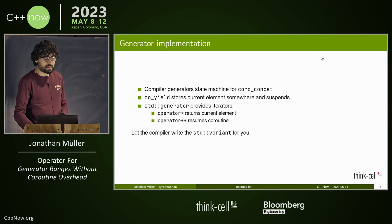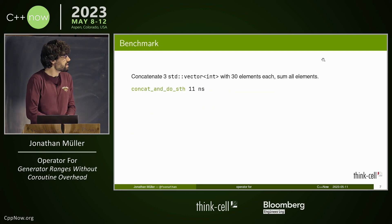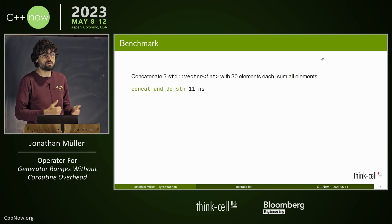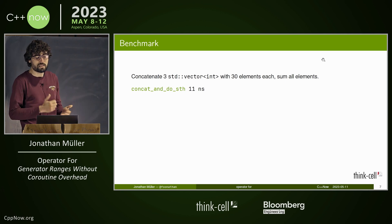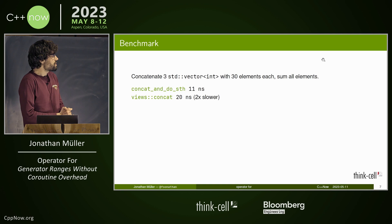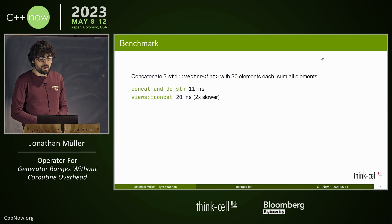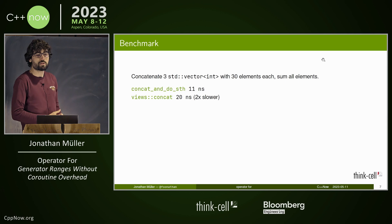So let's benchmark it. The idea is that the compiler writes the std::variant machinery for us, which is nice. I have a simple test: concatenate three vector<int>s with 30 elements each and sum them all. The manual concat takes about 11 nanoseconds — we're just adding 90 integers. views::concat is about two times slower, which makes sense: the variant introduces additional indirection the compiler can't see through. But with coroutines the compiler has generated all the code, so it should see what's going on — performance similar to the manual version, right?